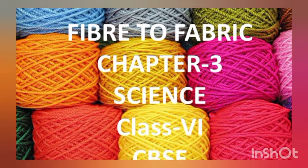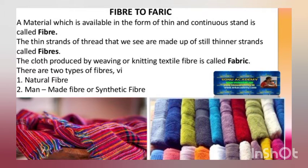Good morning students. Today we are going to study chapter three of your science book, that is Fiber to Fabric. We all wear different types of clothes that protect us from heat and cold and also help us look beautiful. The smallest continuous strand from which our clothes are made is called fiber. From fibers, yarn is produced, and ultimately from yarn we obtain fabrics, from which we can make different types of clothes.